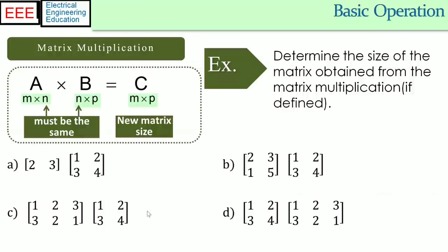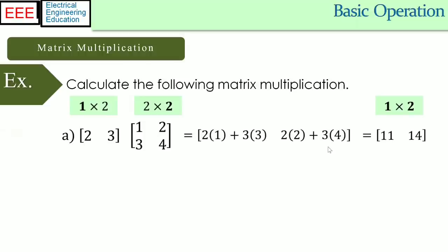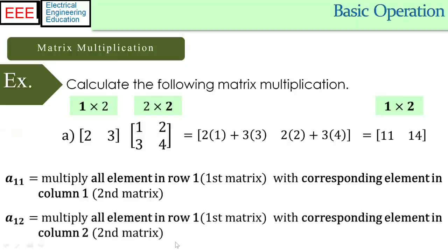In the given examples, multiplication is not possible in case C. An example of how the multiplication is performed is shown. We have a 1 by 2 row vector and a 2 by 2 matrix. The result should be of size 1 by 2. The first element of the result matrix is calculated as the sum of product of the row vector and the first column of the second matrix. Similarly, the second entry is calculated as the sum of product of the given row vector and the second column of the second matrix.